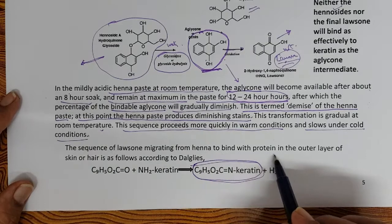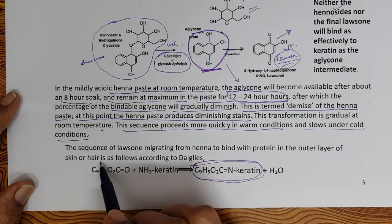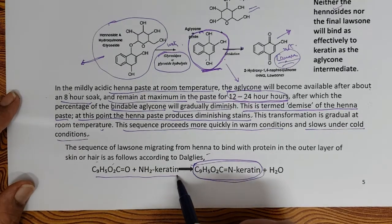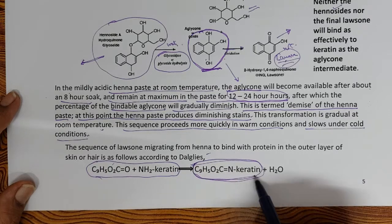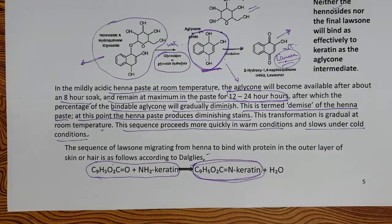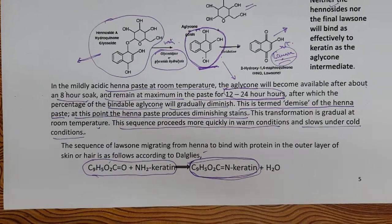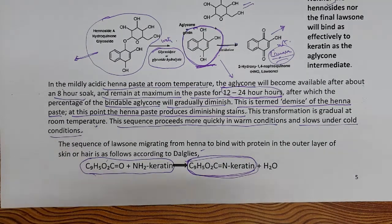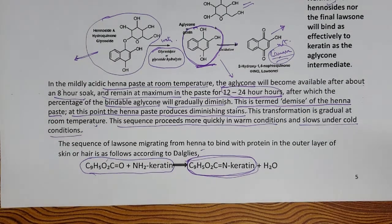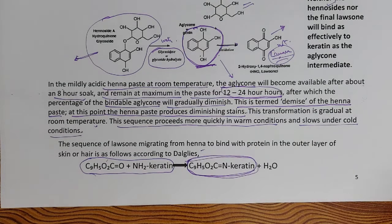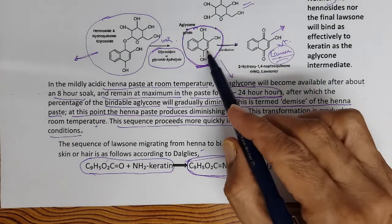The aglycone formed by hydrolysis of hennosides is what colors the hair. The sequence of lawsone migrating to bind the protein in the outer layer of skin or hair forms the lawsone-keratin complex plus water. Unlike oxidative hair dyes where a smaller molecule penetrates inside the hair and becomes a larger molecule locked inside, here the mechanism is entirely different — the aglycone binds to keratin and forms a permanent color. Only newly grown hair retains the original color.